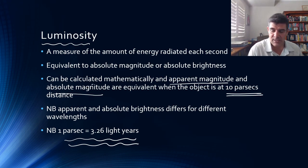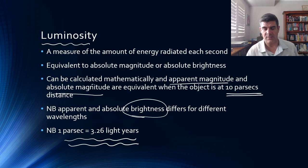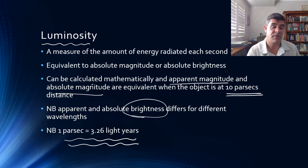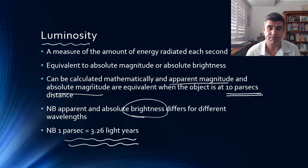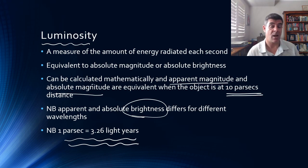The important thing to remember about luminosity and brightness is that there are differences for different parts of the electromagnetic spectrum. In the next video, we'll have a bit more of a look at actual star life cycles. Thanks for watching.